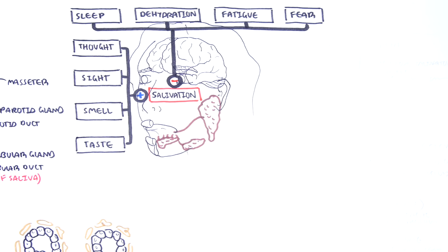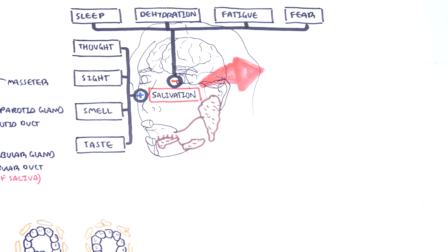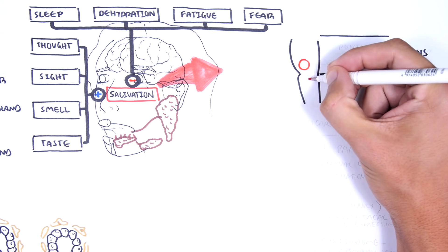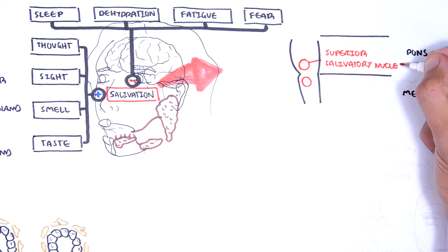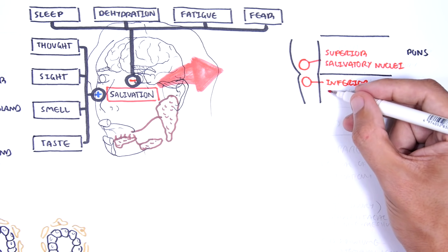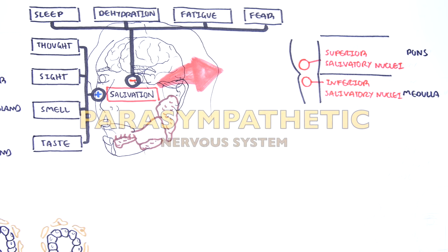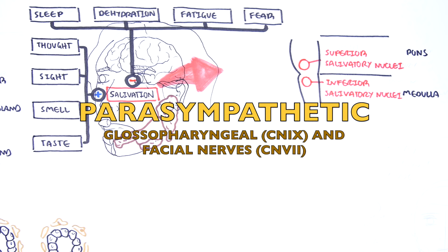The salivary glands have different nerves which supply it. In the brainstem you have the pons and medulla region, and here you can find the superior salivatory nucleus and the inferior salivatory nucleus. The part of the nervous system responsible for the rest and digest response and saliva production is the parasympathetic nervous system. The salivatory nucleus has parasympathetic neurons targeting the salivary glands via the glossopharyngeal nerve and the facial nerve.